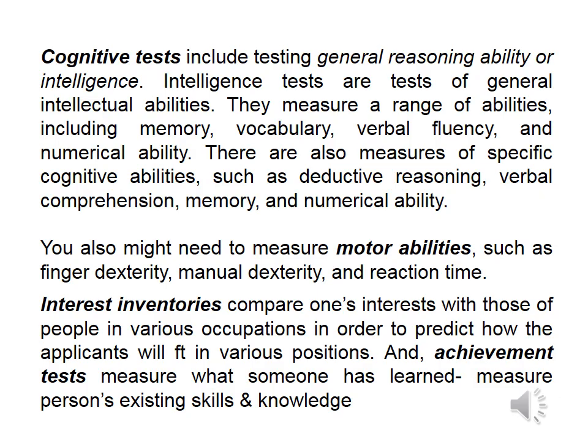Most organizations start with cognitive tests that measure the intellectual abilities of the applicants, and may include some types of tests like IQ, memory testing, verbal fluency, and numerical abilities. Other types of selection tests include motor ability tests that may test finger dexterity, manual dexterity, and reaction time. This type of test is required by some jobs in some organizations, but not necessary in all organizations.